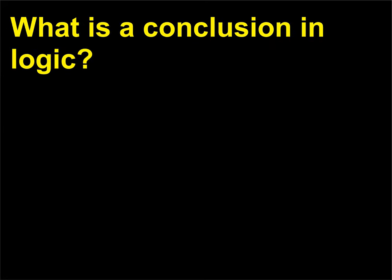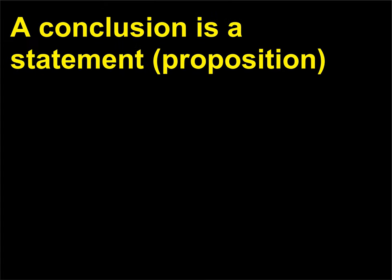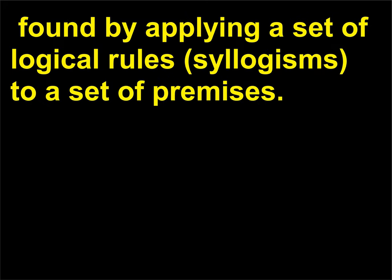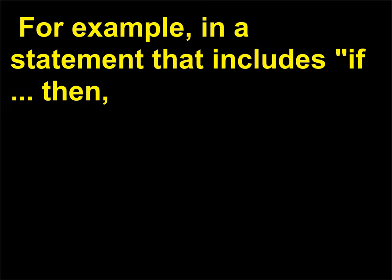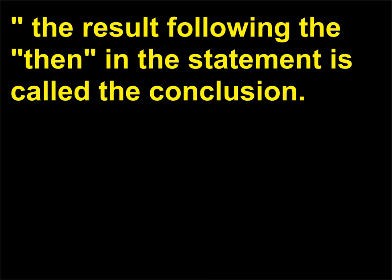What is a conclusion in logic? A conclusion is a statement or proposition found by applying a set of logical rules — syllogisms — to a set of premises. The final statement of a proof is called the proof's conclusion. For example, in a statement that includes IF, THEN, the result following the THEN in the statement is called the conclusion.